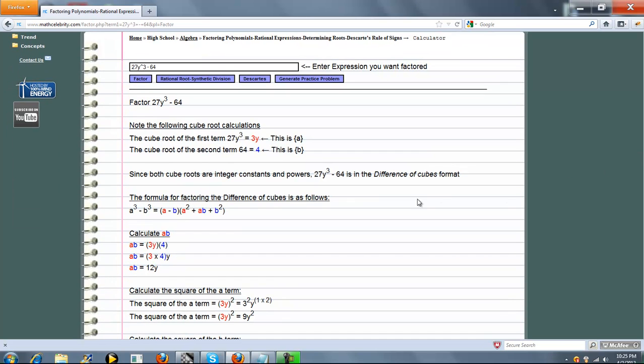Now the calculator determines 27y cubed has a cube root—that's 3y. And 64 also has a cube root—that's 4. So we have a difference of cubes, and the difference of cubes factor formula is right here.